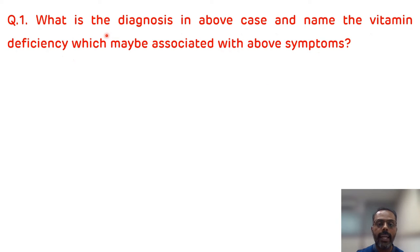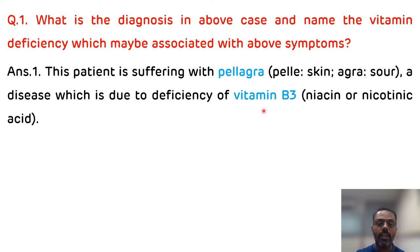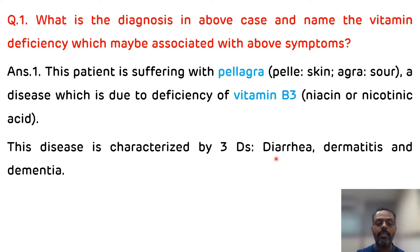The first question is: what is the diagnosis in this case, and name the vitamin deficiency which may be associated with these symptoms? From the description, the patient is having diarrhea and dry itchy scaly lesions around the neck and dorsum of the hands. The patient is also consuming maize for the last 10 years. From all these hints, we can say that the patient is having pellagra, which occurs due to the deficiency of niacin, which is vitamin B3. Pellagra is characterized by 3Ds: diarrhea, dermatitis, and dementia.